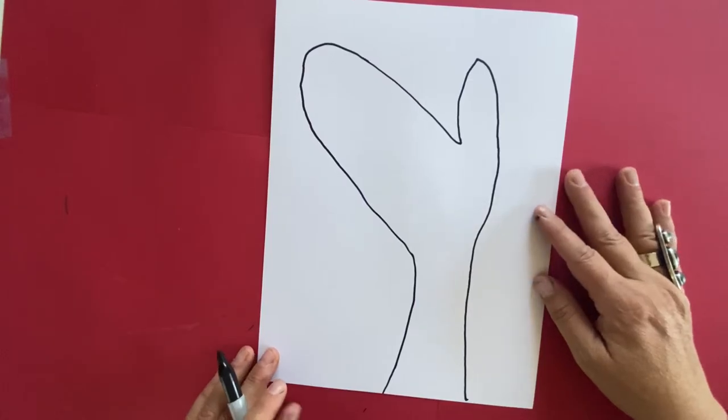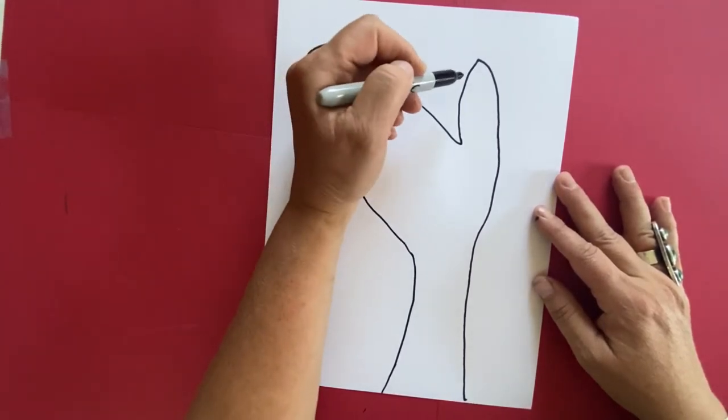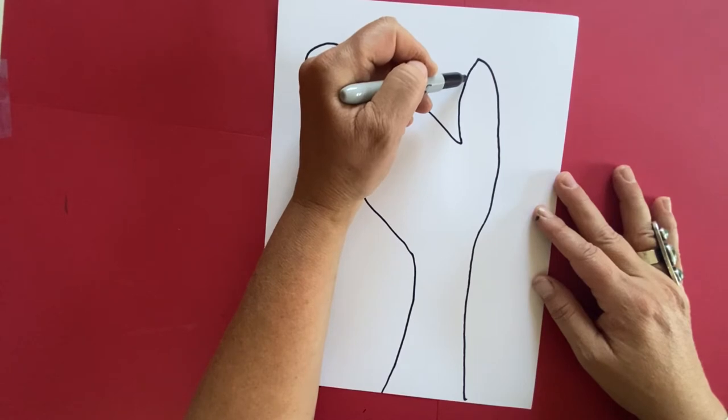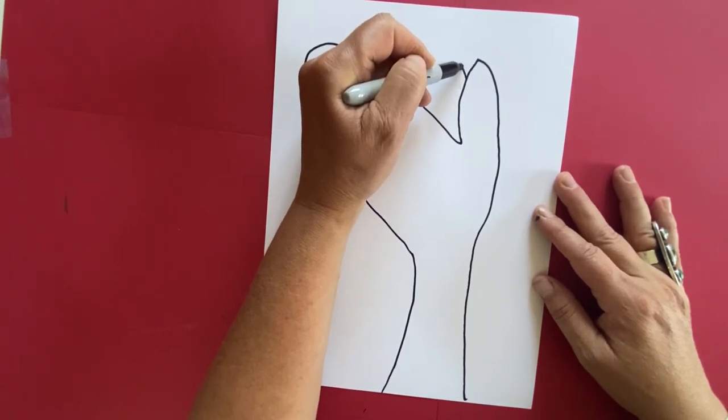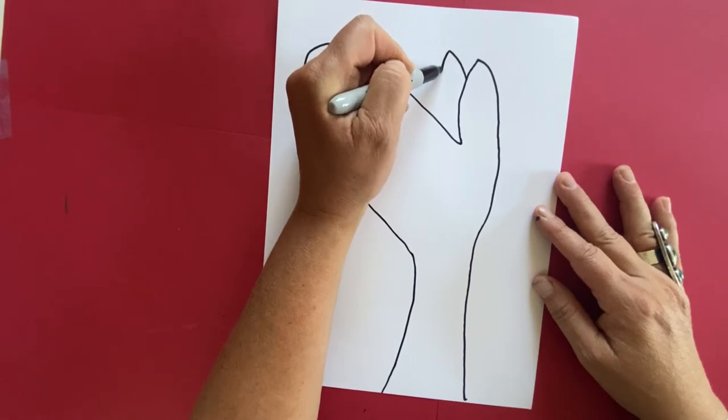So now you should have something that looks similar to this in front of you. It doesn't have to be exact. But first we're going to draw the ear right next to that other thumb ear. Just draw a line going up, meeting up about the same height, and going back down towards the face.